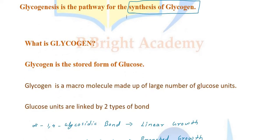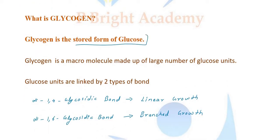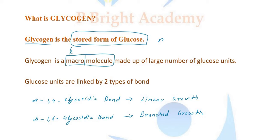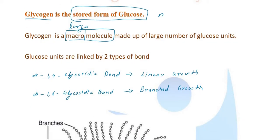What is glycogen? Glycogen is the stored form of glucose. It is a macromolecule — a large molecule containing small units of glucose. There are two types of bonds: alpha-1,4 glycosidic linkage and alpha-1,6 glycosidic linkage.